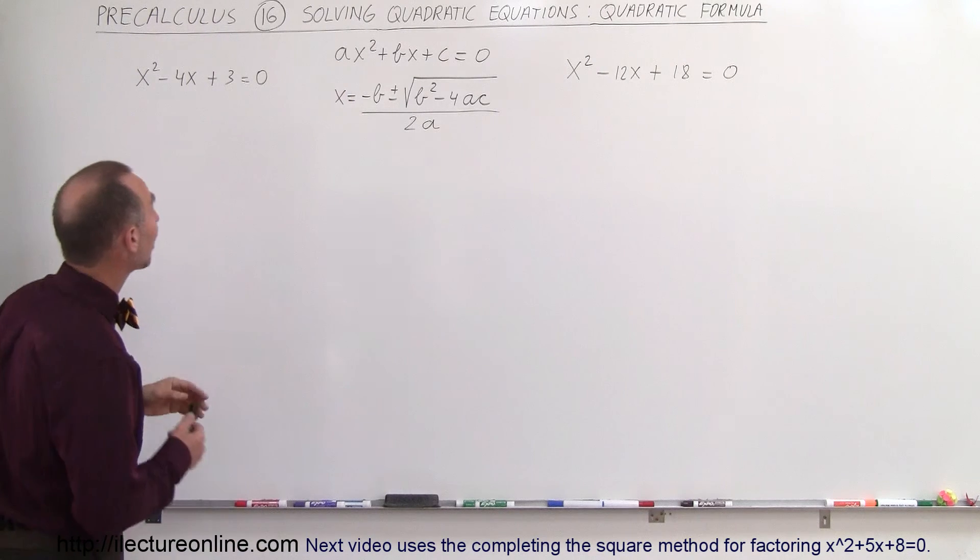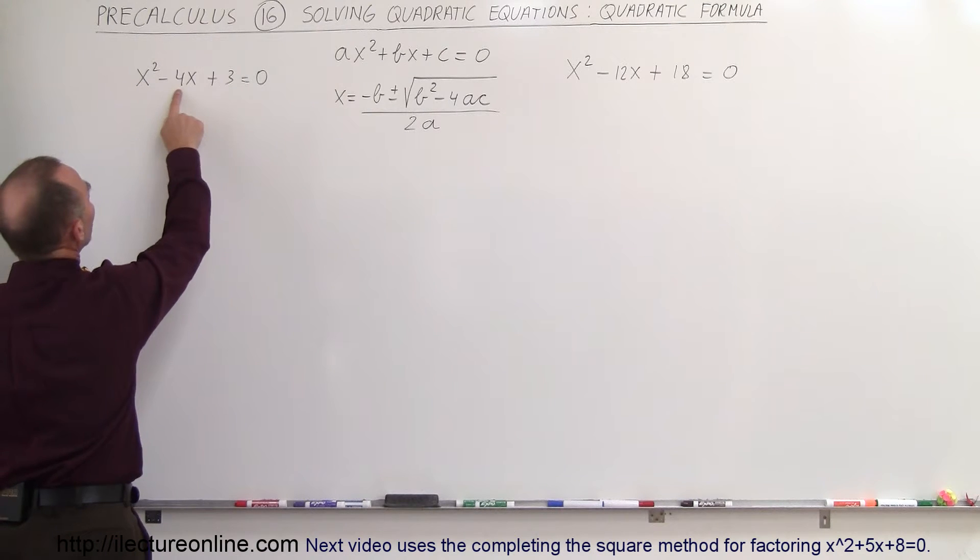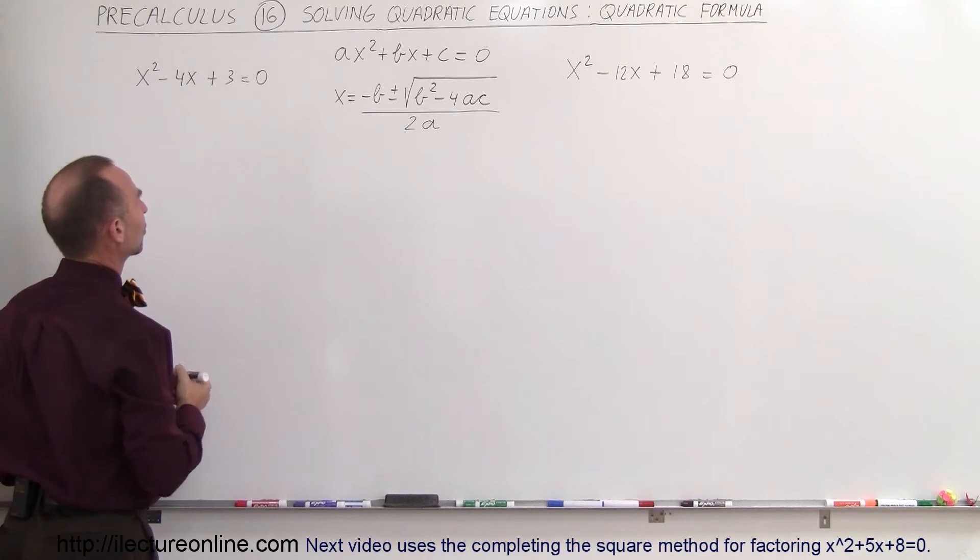So let's try that for these two examples. Our first example right here, notice that a would be 1, b is negative 4, and c is 3. So therefore,